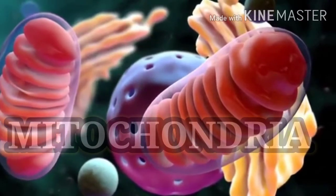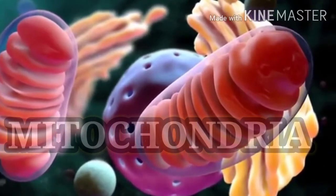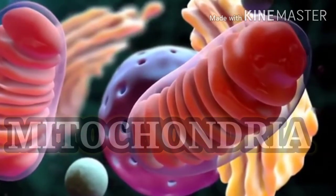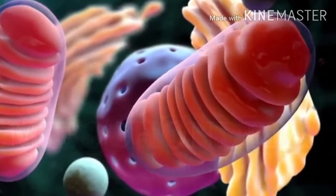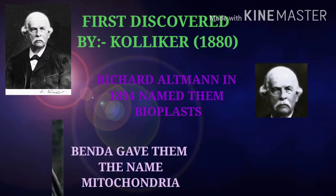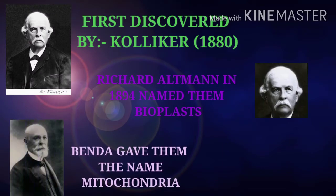We all know that mitochondria is the powerhouse of the cell. These were first discovered by Collicker in 1880. Altman in 1894 named them as bioplasts. Later in 1897, Benda gave them the name mitochondria, which in singular is known as mitochondrion.